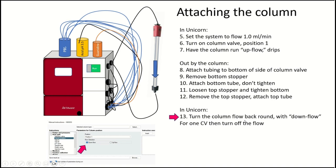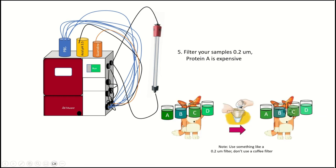Once we're done with that, we're going to remove the stopper and attach the top tube. Okay. Then of course there's one more step, which is we're going to turn the column valve back to downflow right here, downflow inside unicorn. Right. And that'll cause the flow to go in the proper direction. And we're going to let it run that way for about a CV. And then we're going to turn off the flow.